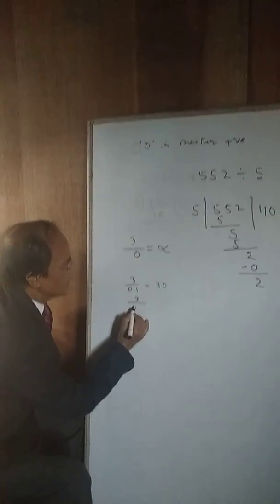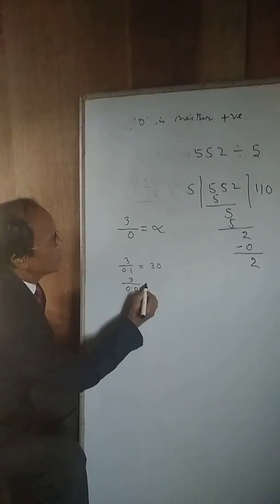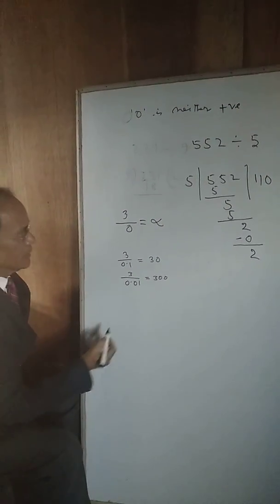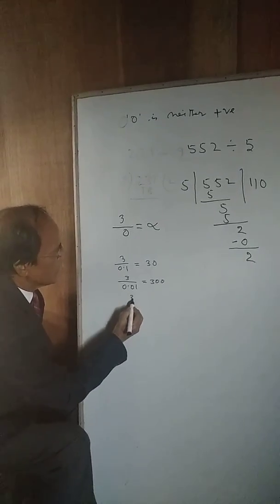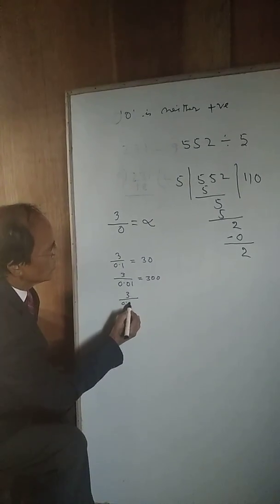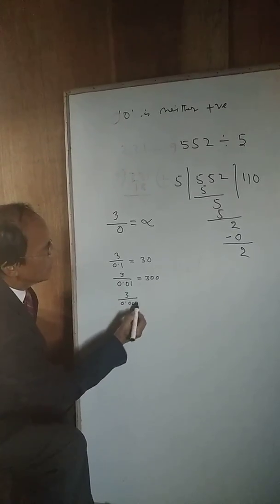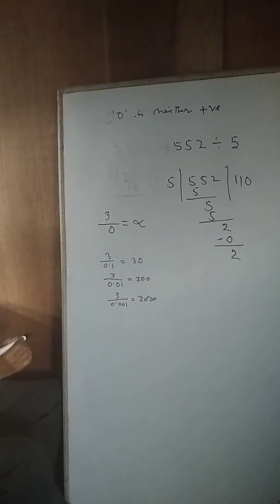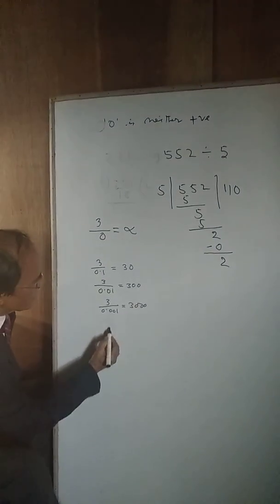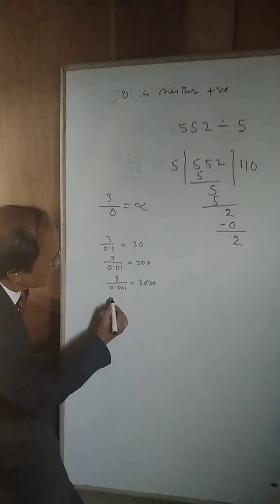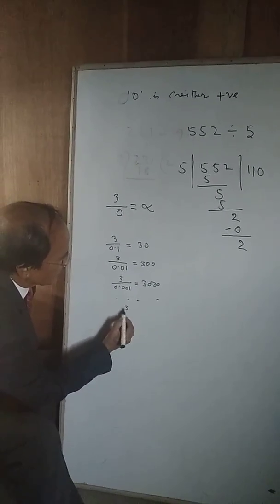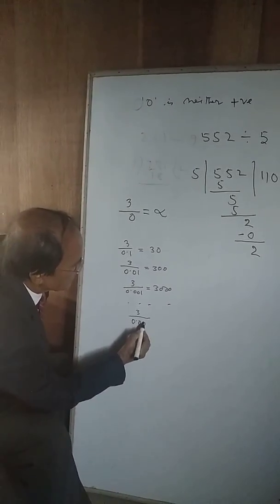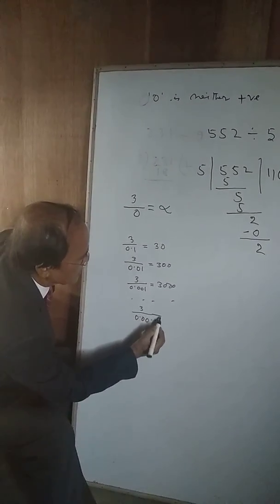3 divided by 0.01 equals 300. Then 3 divided by 0.001 will be equal to 3,000. In this way we have continued like this. 3 divided by 0.00... and so on.